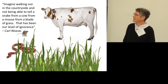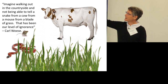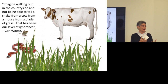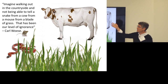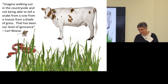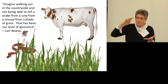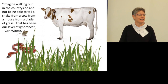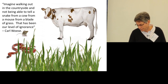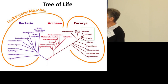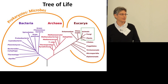He first proposed these three kingdoms of life in 1977. There's a nice quote from him: imagine walking in the countryside and not being able to tell a snake from a cow, from a mouse, from a blade of grass. When you think about the microbial world, all we see are tiny single-cell organisms that all look about the same, and you can't tell one from another — but they are way more different even than a cow is from a blade of grass. This huge diversity has only been appreciated in the last 50 years.